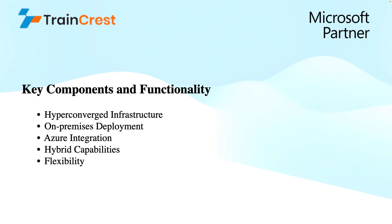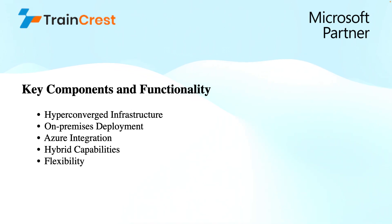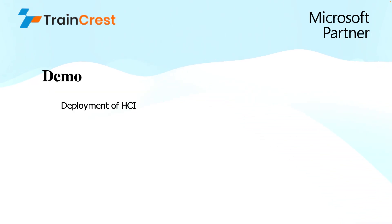Next is hybrid capabilities, enabling seamless integration of on-premises and cloud workloads, providing flexibility to run workloads in your desired public or private cloud. Last is flexibility — the key advantage of hybrid cloud is the flexibility for various hardware configurations and workloads, running some on-premises and deploying key services into Azure. Without further ado, let's look into the deployment of the Azure Stack HCI operating system.